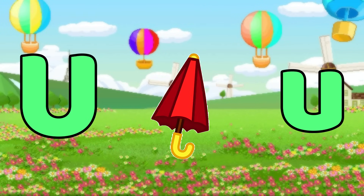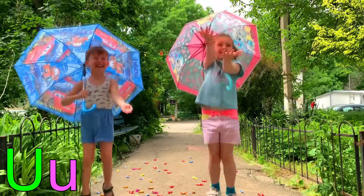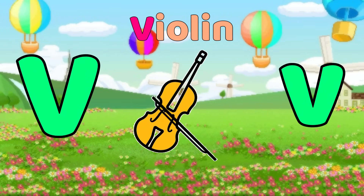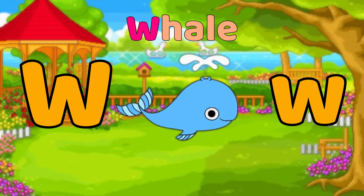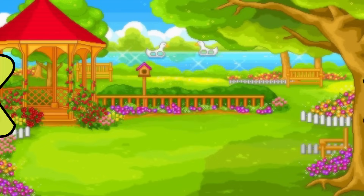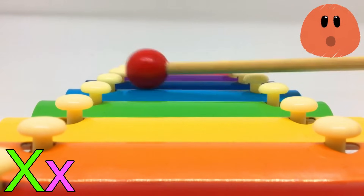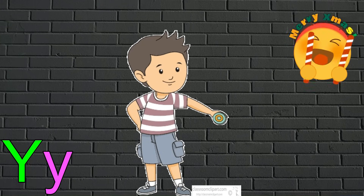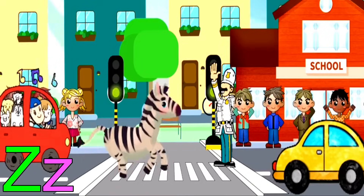U is for Umbrella. A-A-Umbrella. V is for Violin. V-V-Violin. W is for Whale. W-W-Whale. X is for Xylophone. Z-Z-Xylophone. Y is for Yo-yo. Y-Y-Yo-yo. Z is for Zebra. Z-Z-Zebra.